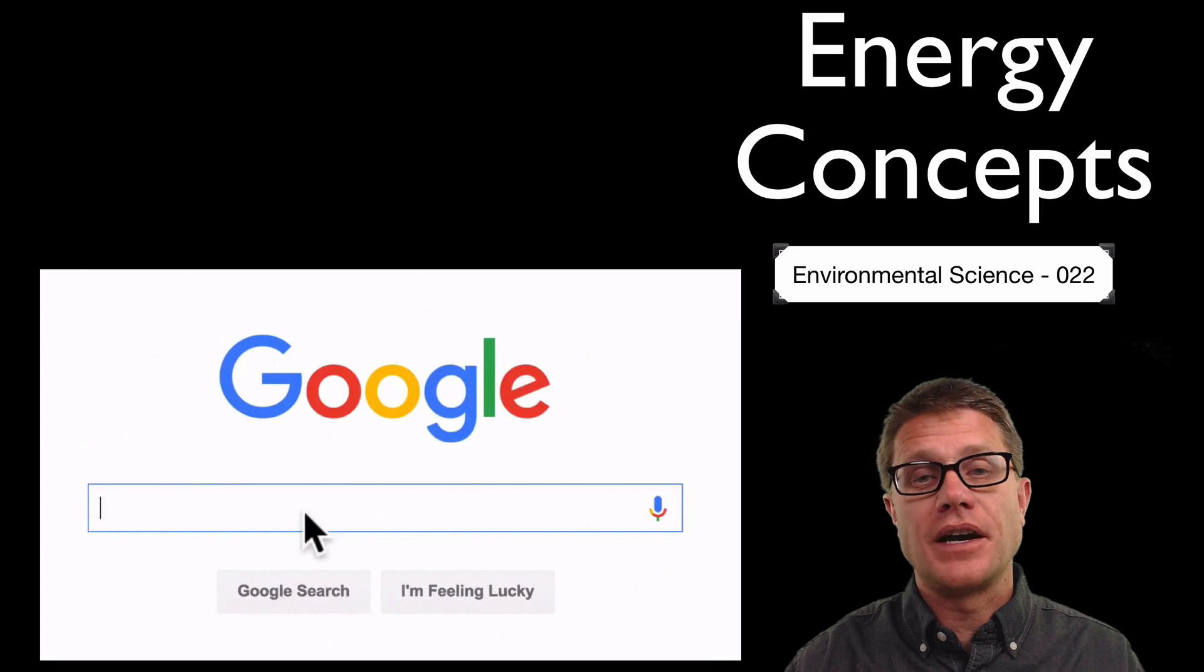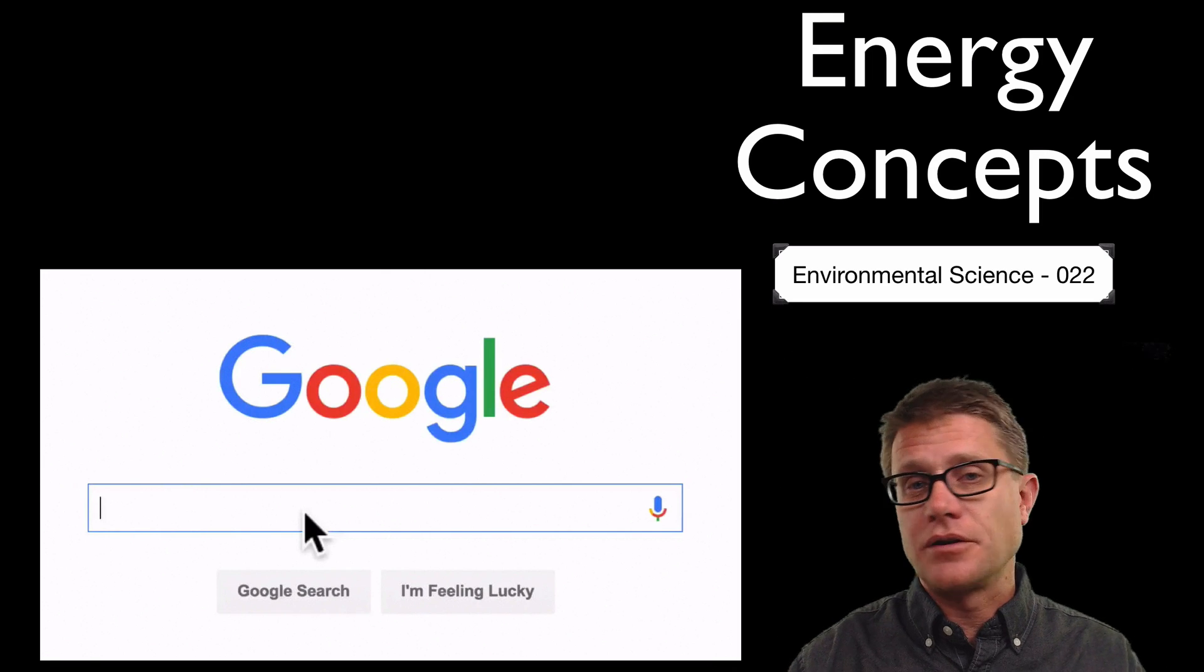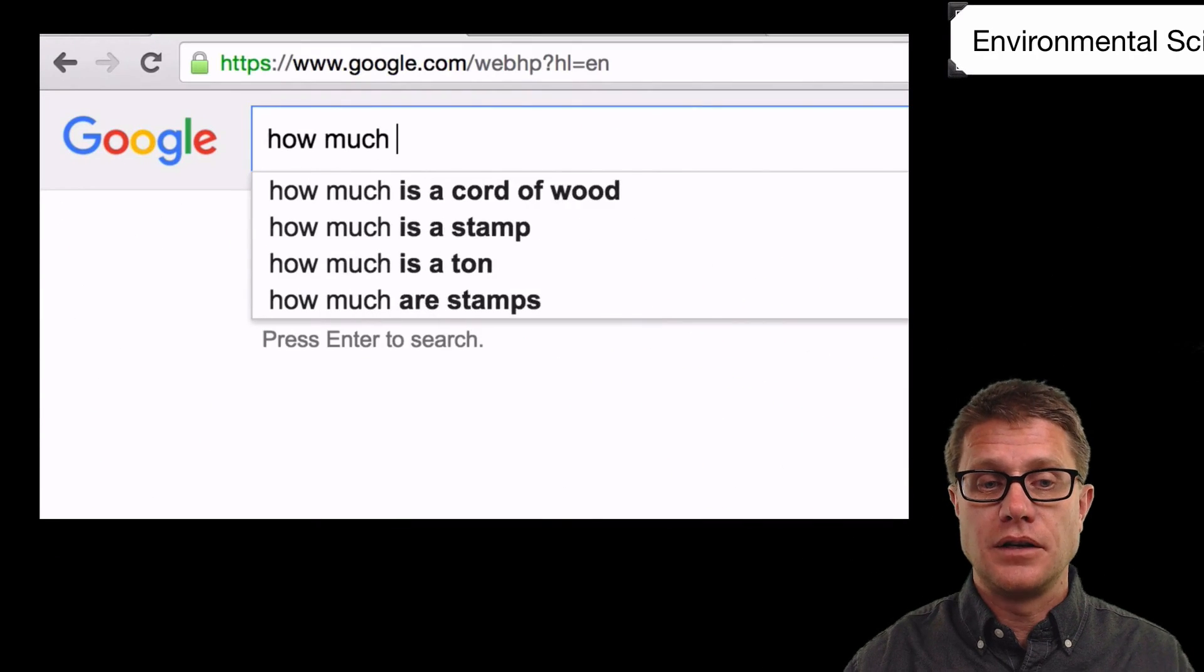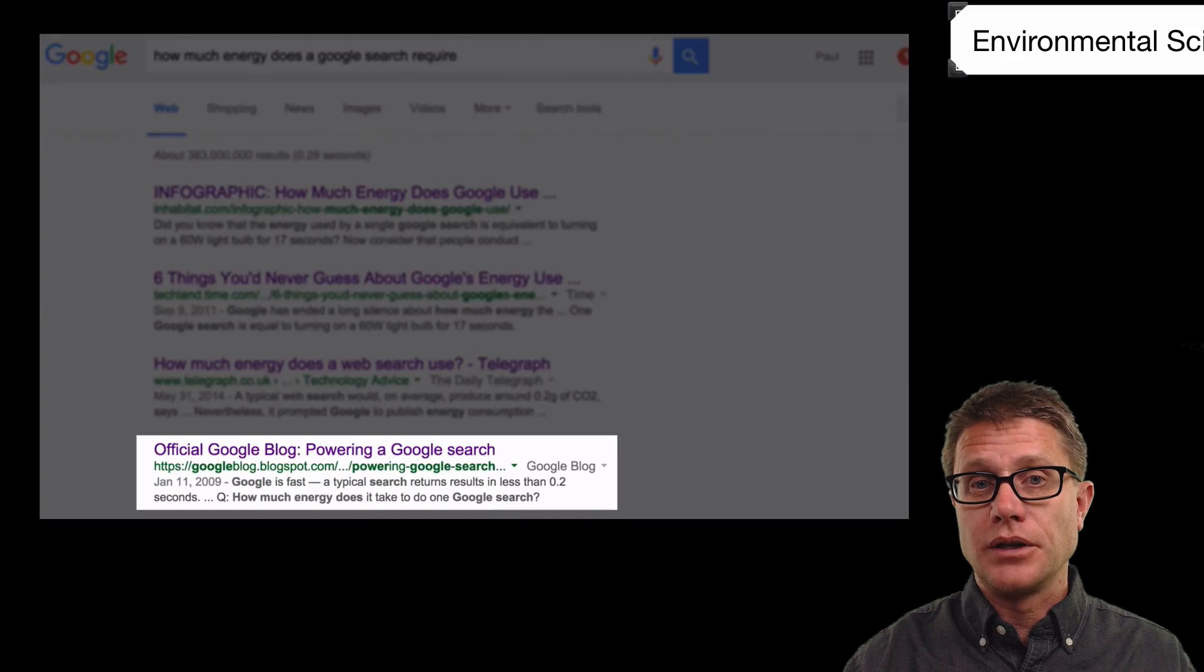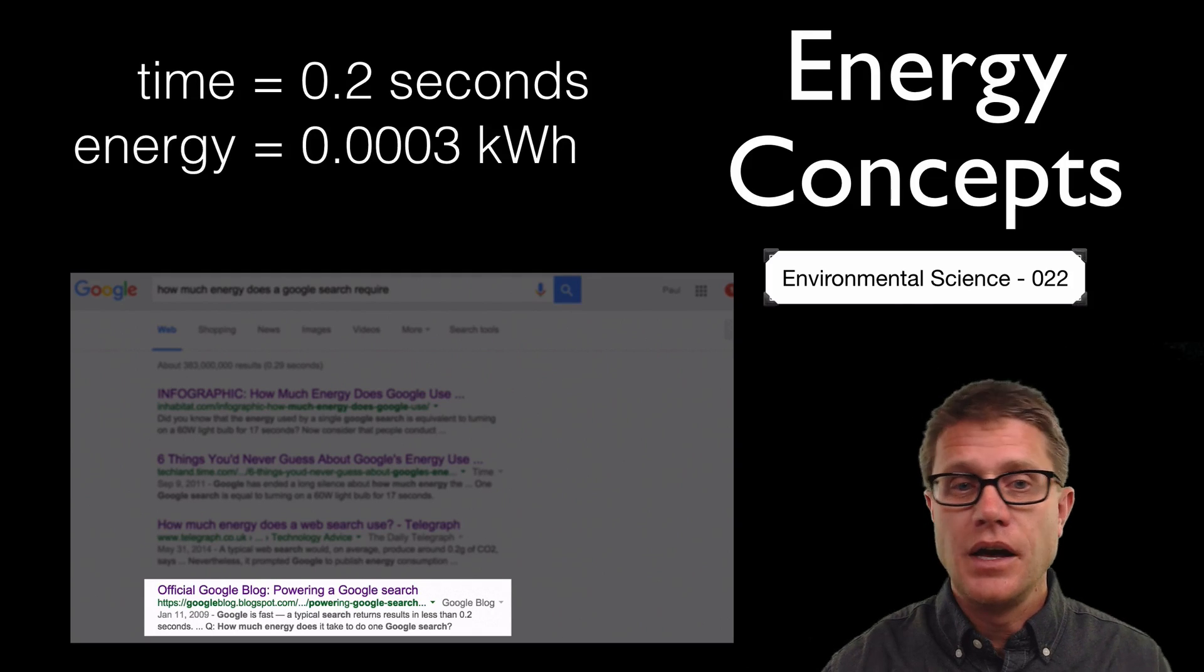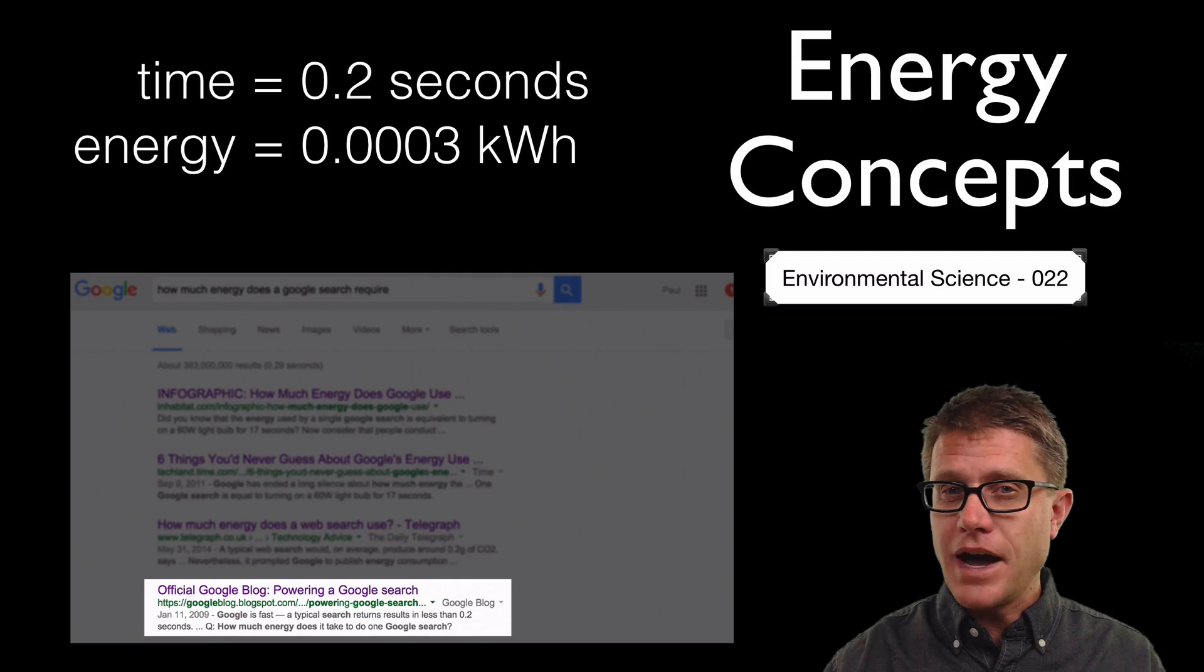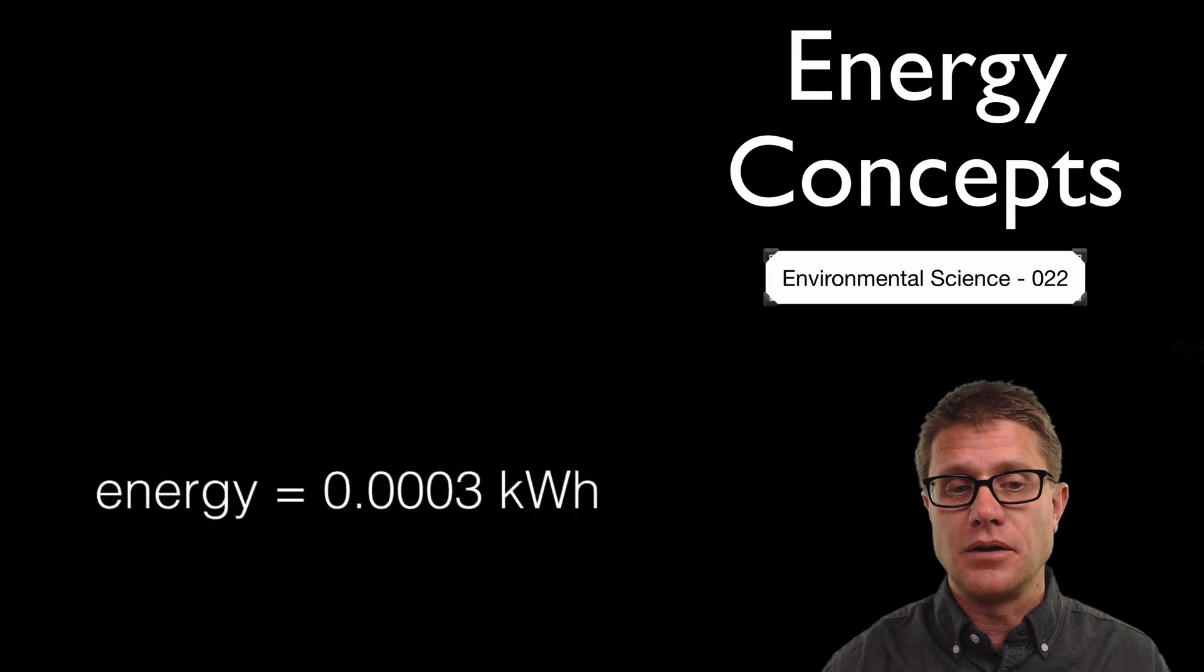Hi, it is Mr. Ray Anderson and this is environmental sciences video 22 on energy concepts. I was wondering how much energy it takes to do a Google search, so I did a Google search. Google says a typical search takes 0.2 seconds and requires 0.0003 kilowatt hours. That's fast, but I don't know how much energy that is, so we can use energy concepts to figure that out.